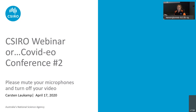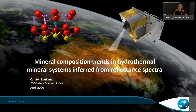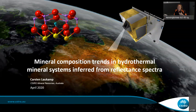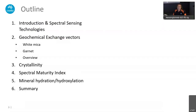Thanks Ryan for the introduction and thanks everyone for calling in today. I would like to give a presentation entitled 'Mineral composition trends in hydrothermal mineral systems inferred from reflectance spectra.' It's about how we can map geochemical variations and variations in the chemistry of certain minerals using reflectance spectroscopy — from the microscope scale, but also with drill core sensing technologies, airborne sensors, and maybe even spaceborne sensors.